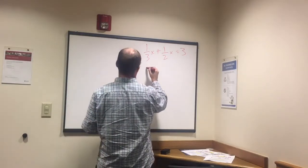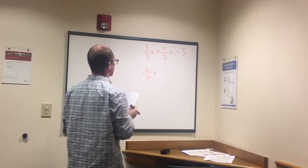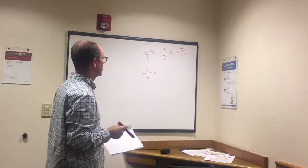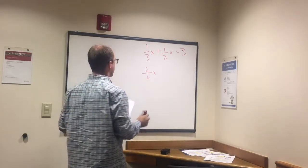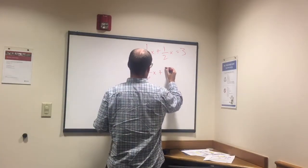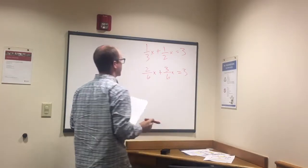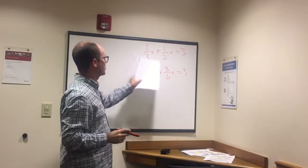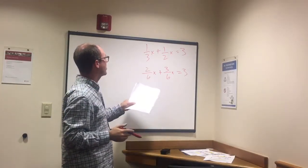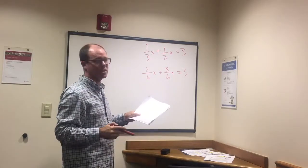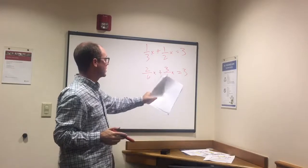So 1 third x is the same as 2 sixths x, just multiply the top and the bottom by 2. 1 times 2 is 2, 3 times 2 is 6. So 2 sixths x plus 3 sixths x equals 3. The way I did that is with the 1 half x I multiplied top and bottom, numerator and denominator by 3. So 1 times 3 is 3, 2 times 3 is 6. Now we have 3 sixths x equals 3.